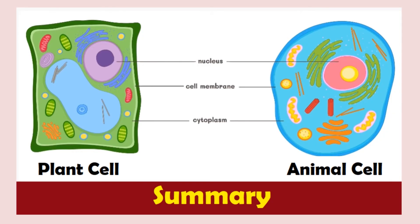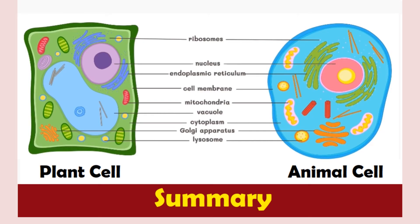Alright, as a recap, here are all the organelles that we discussed. The three main components of the cell are: cell membrane, nucleus, and cytoplasm. Within the cytoplasm are the organelles, which include mitochondria, ribosomes, smooth and rough endoplasmic reticulum, Golgi apparatus, lysosomes, and — not seen in this illustration of the animal cell — the vacuole.